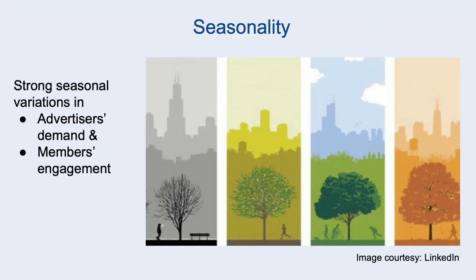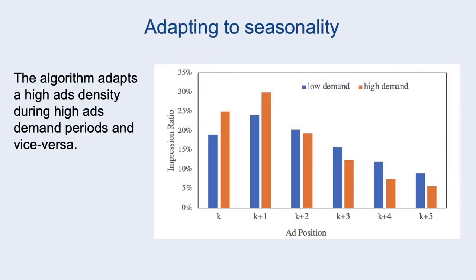Another salient feature of advertising systems is strong seasonality, for example, quarterly and annual budget demand patterns. Member engagement also demonstrates various kinds of periodic behavior. Our algorithm enables the ad density on the newsfeed to adapt well to such systematic fluctuations. As this figure illustrates, the ad density is higher when ads demand is higher, and vice versa.